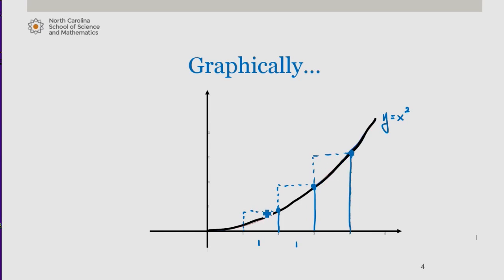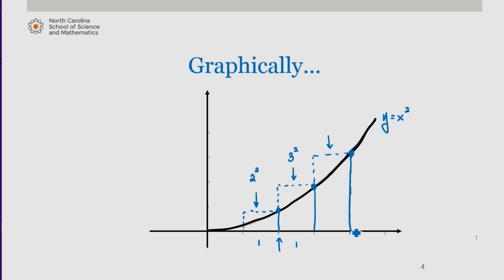The height is determined by the function y equals x squared. For example, the area of the first rectangle here is 1 times its height. Since this x value is 2, this height is 2 squared, so the area of this rectangle is 2 squared. The area of the next rectangle is 1 times 3 squared, and this rectangle is 1 times 4 squared, and so on. We notice that this can be written as the sum from k equals 2 to infinity of k squared.